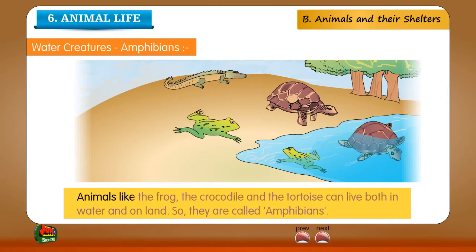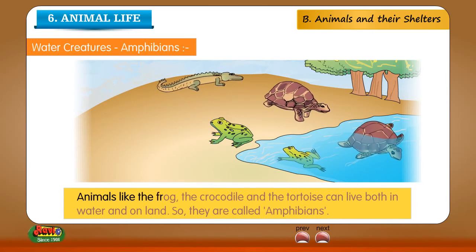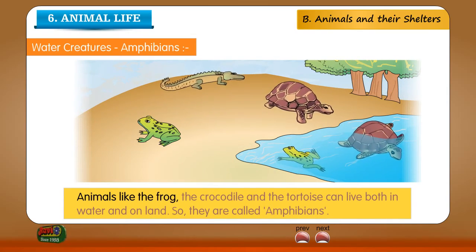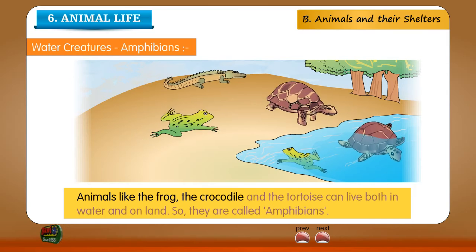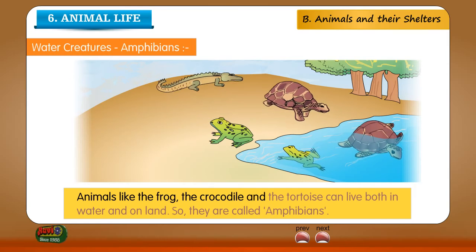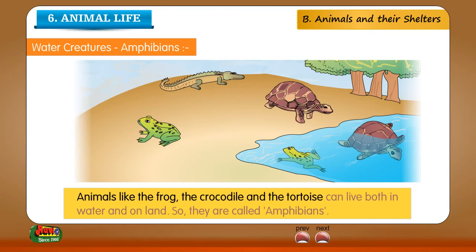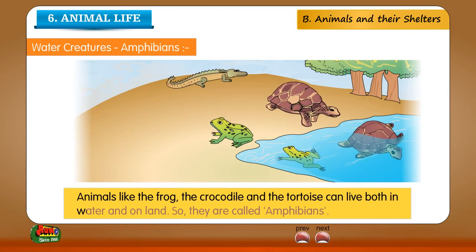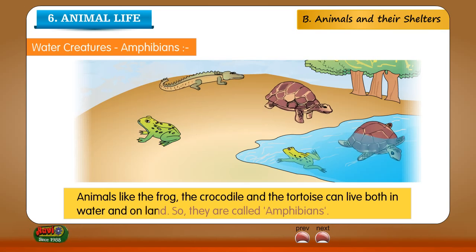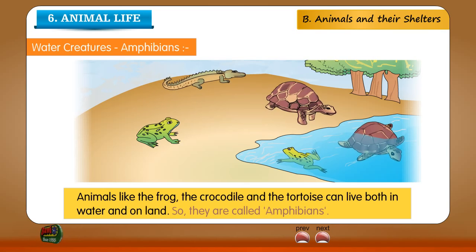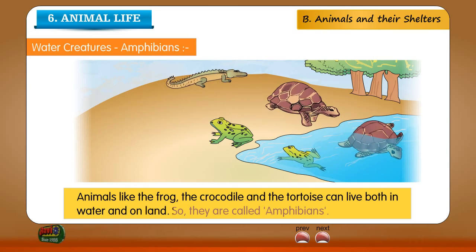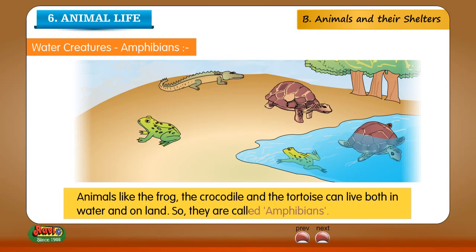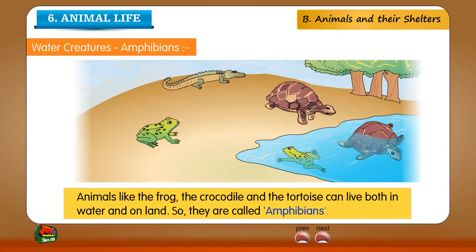Animals like the frog, the crocodile and the tortoise can live both in water and on land. So they are called amphibians.